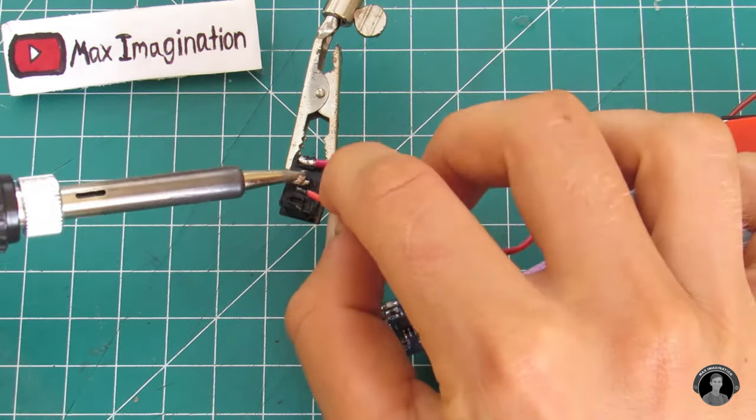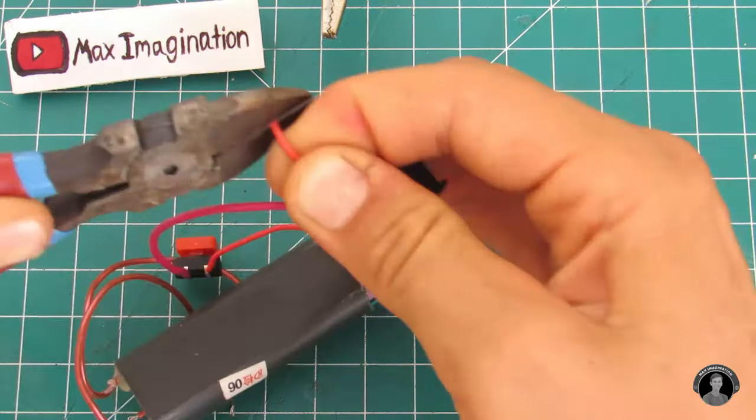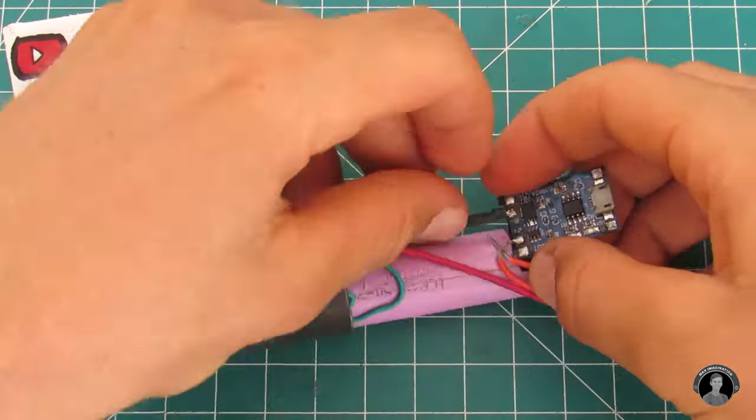Solder the loose push button wire to one end of the safety switch and the other end of the safety switch back to the positive battery terminal.